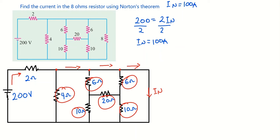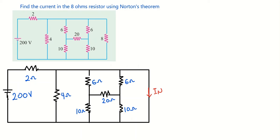Norton's current is 100 amperes. Now we need to find Norton's resistance so we can use it to find the current in the 8-ohm resistor. To find Norton's resistance, remove the 8-ohm resistor and measure resistance from those terminals. Since there is a voltage source in the circuit, you have to short-circuit the voltage source.